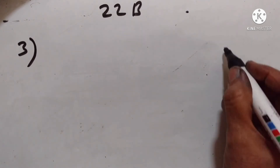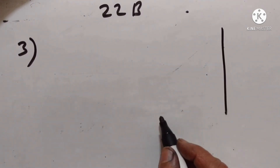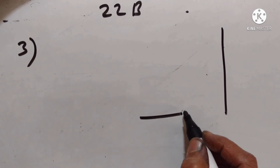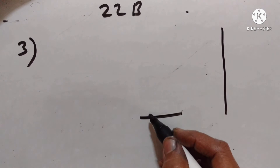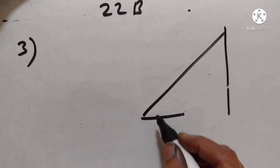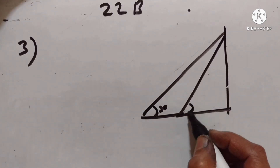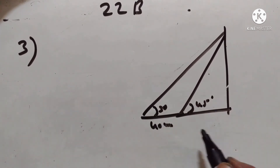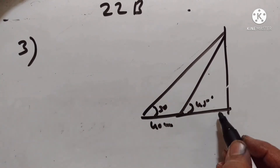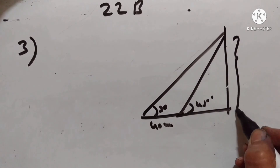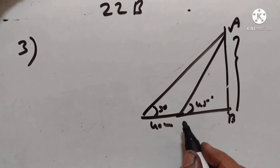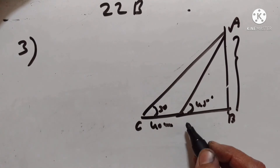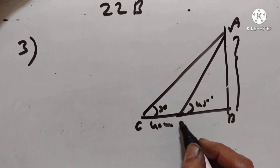Third problem: find the height of a building. When it is found that on walking towards it 40 meters in a horizontal line through its base, the angular elevation of its top changes from 30 degrees to 45 degrees. Let AB be the height. Let the initial position be C, then after walking 40 meters, the next position is D.